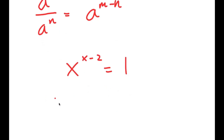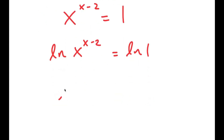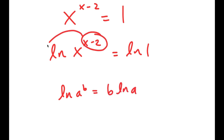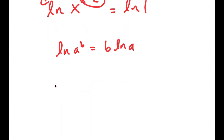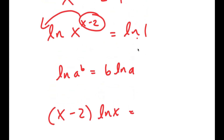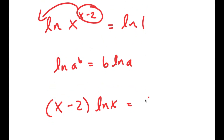From here, I'm going to take the ln on both sides. So I get ln of x to the power of x minus 2 is equal to ln of 1. Now, if I have something in the form ln of a to the power of b, this is equal to b times ln a. So I can move x minus 2 to the front, and I get x minus 2 times ln x is equal to ln of 1, which is 0.